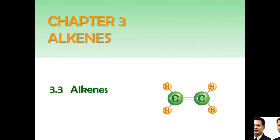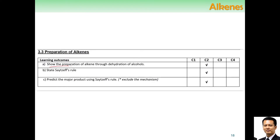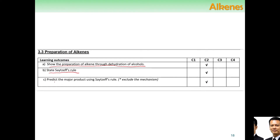Assalamualaikum and hello to all. We are going to continue to chapter 3.3, Alkene. At the end of the lesson, you are going to study about the preparation of alkene through dehydration of alcohol, state Zaitsev's rule, and predict the major product using Zaitsev's rule.